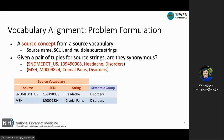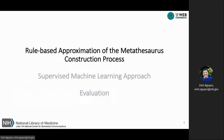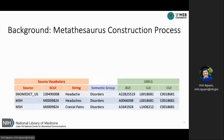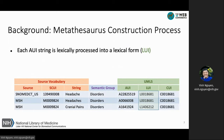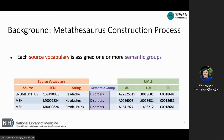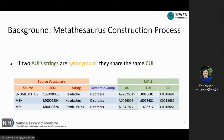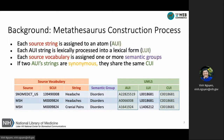Next, we describe the approaches for addressing this problem, starting with the rule-based approach. Here we briefly describe the essential steps and important concepts from the construction process. Every string is assigned to an atom in the metathesaurus, or AUI. Each AUI string is lexically processed into a lexical form, or LUI. Each source vocabulary is also assigned one or more semantic groups. If two AUI strings are synonymous, they share the same CUI. In the next slide, we approximate this process with a set of rules.